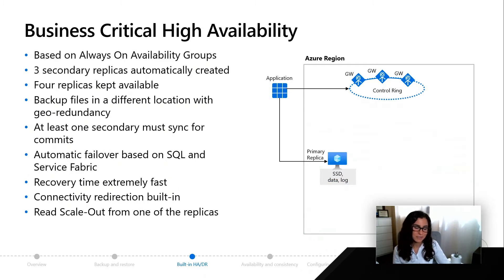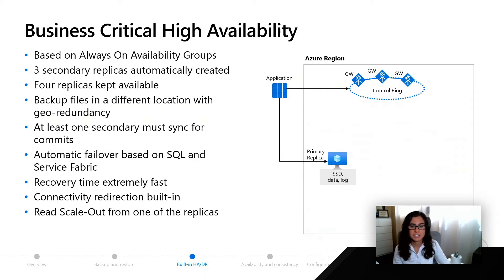The next service tier we're going to talk about — and this applies to both Azure SQL Database and SQL Managed Instance — is business critical. What you're seeing here is very similar to general purpose. At a high level, we have our application leveraging the gateways and the control ring. Depending on if you're using redirect or proxy, you'll either always go to the gateway or go straight to your database. Since it's business critical, we have your data, your log, including your TempDB, all running on the primary replica.